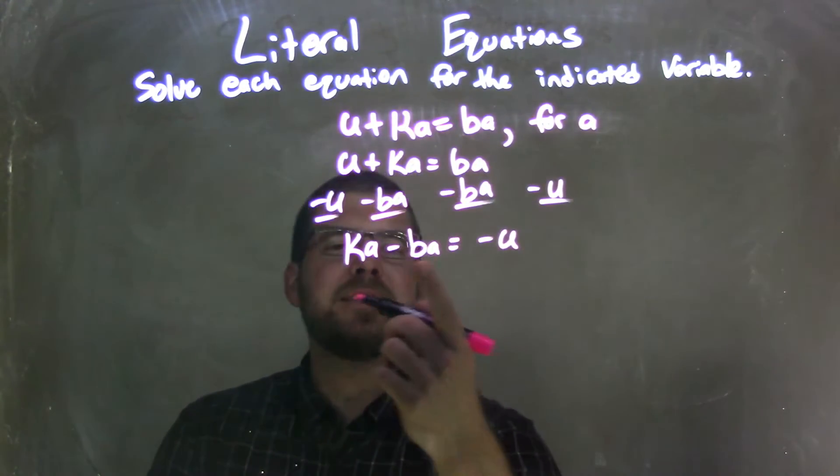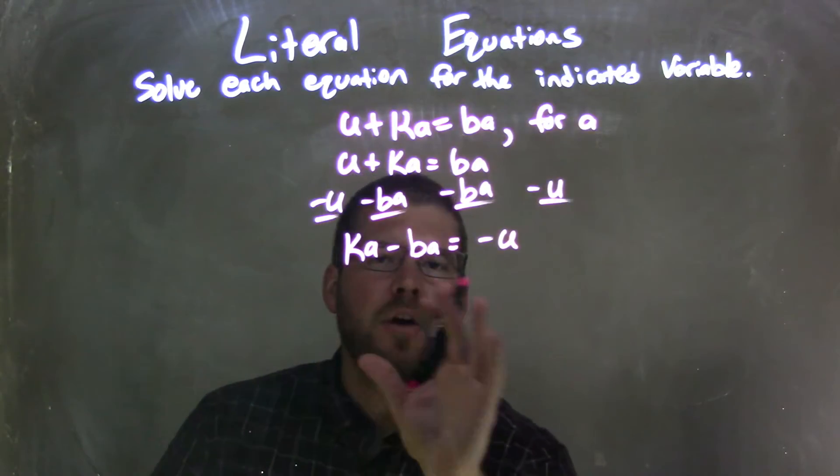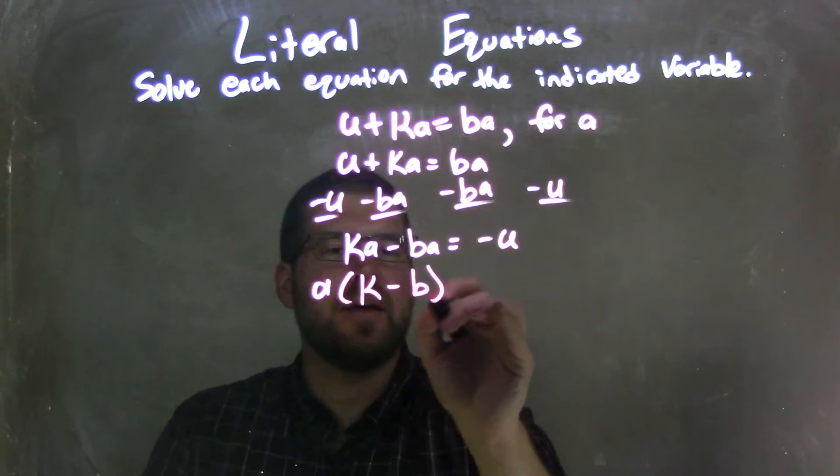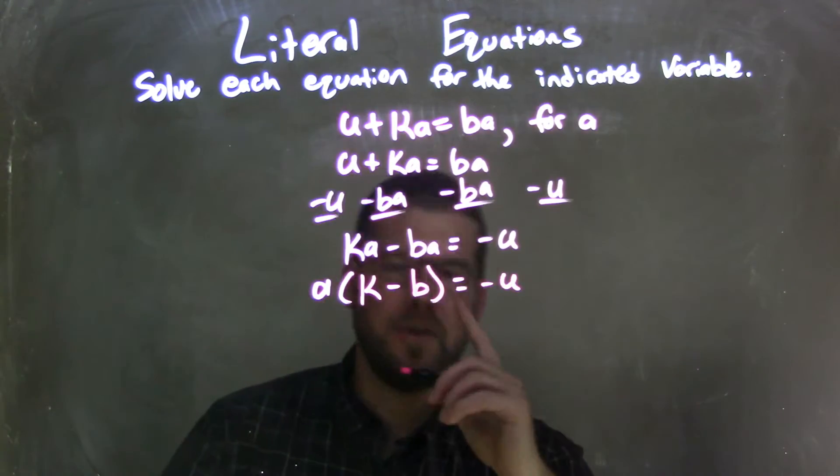From there, I see that there's an a in both parts here. So if I pull out an a from both parts, I'm left with a k minus a b times a on the outside equals a negative u.